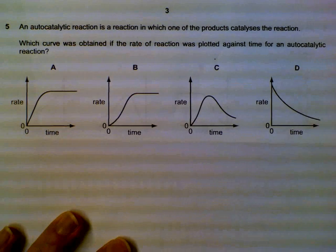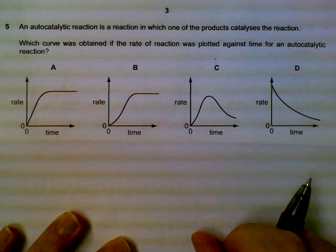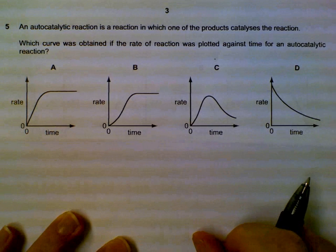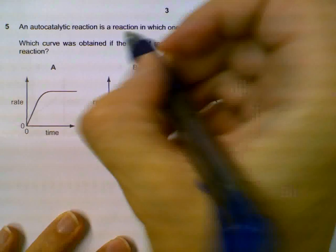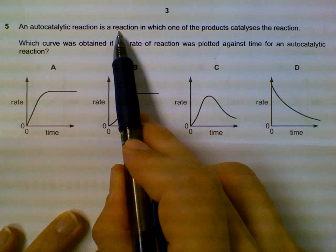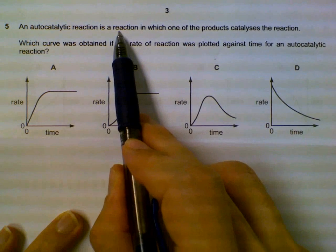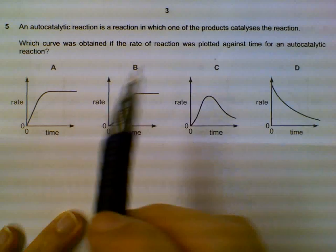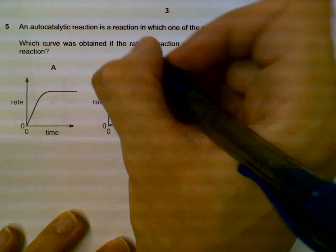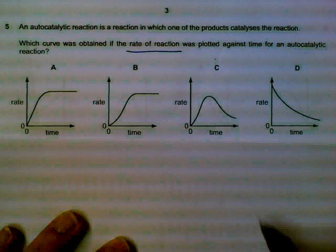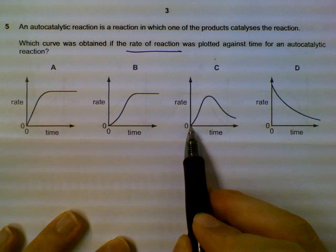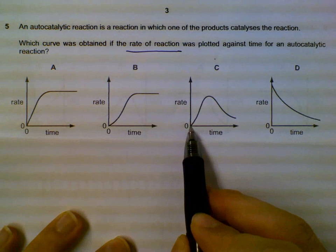Number five, autocatalytic reaction actually means it produces a substance that actually speeds up the reaction. It produces a catalyst during the reaction itself. So what curve represents the rate of reaction? At the start, the rate will be zero because we don't have any catalyst. It will be pretty slow.